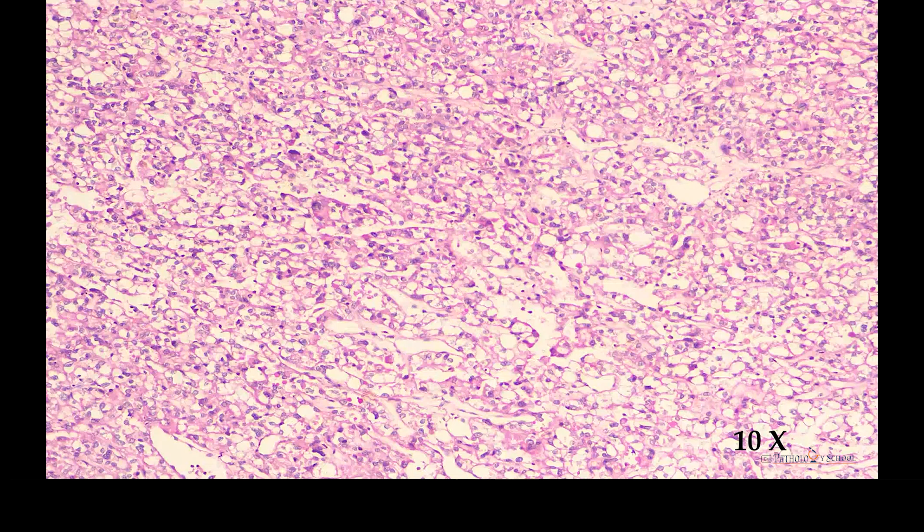Considering the patient's age of 25 years, the slide provided, and the histomorphology, we had some differentials in mind which were: choroid plexus tumor including atypical papilloma and choroid plexus carcinoma; yolk sac tumor, because of the hyaline globules and reticular pattern seen in such a young patient; metastasis; papillary meningioma; and papillary ependymoma on the lower end.